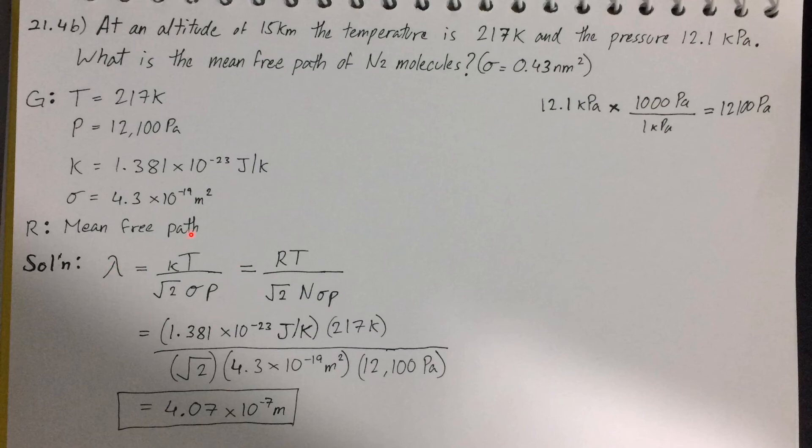So using the first formula, after plugging in all the values, I was able to come up with 4.07 times 10 to the negative 7 meters.